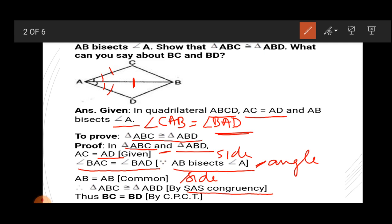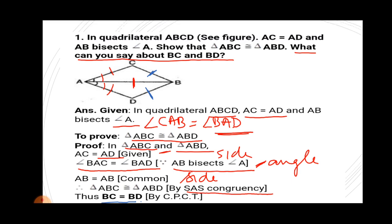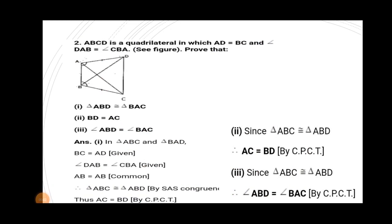By Side-Angle-Side congruence rule, triangle ABC is congruent to triangle ABD. Next part: what can you say about BC and BD? We know if triangles are congruent then their corresponding parts are equal, so BC equals BD, as triangle ABC is congruent to triangle ABD, by CPCT. CPCT stands for Corresponding Parts of Congruent Triangles.